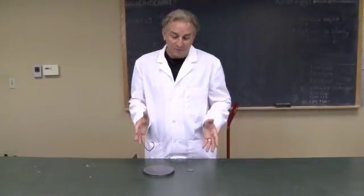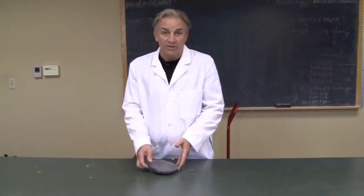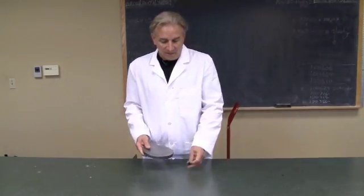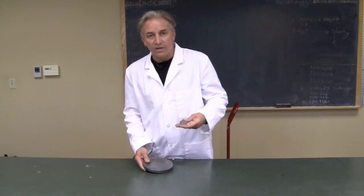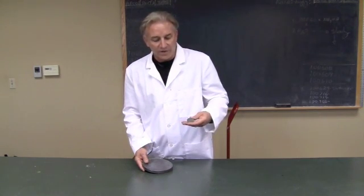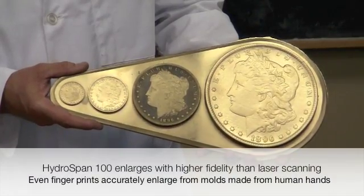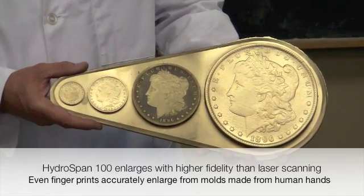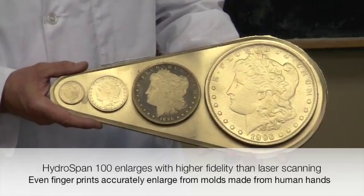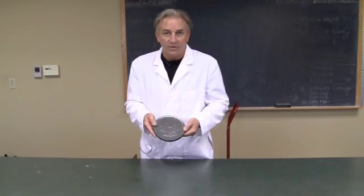HydroSpan 100 can copy any object in three dimensions and do it with incredible fidelity. Here we took a 1896 silver dollar. With three generations, we were able to grow it to almost eight inches across. Every stripe mark and every detail has been copied perfectly with the HydroSpan 100.